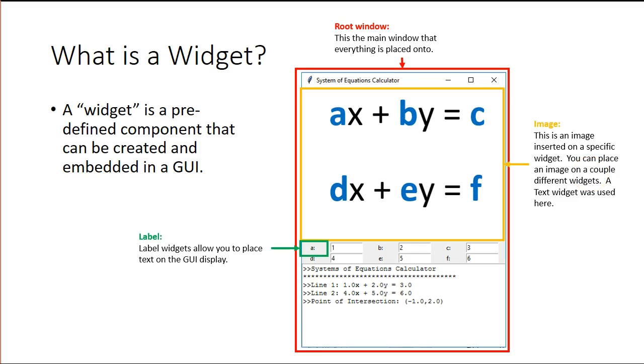We have a label. The label is a simple widget that allows us to place some text on a GUI display. We have an entry. An entry widget is a single box that's designed to take an input. All inputs from entry widgets are considered strings so we're going to have to talk about how to convert the input type from a string to some sort of numerical type.